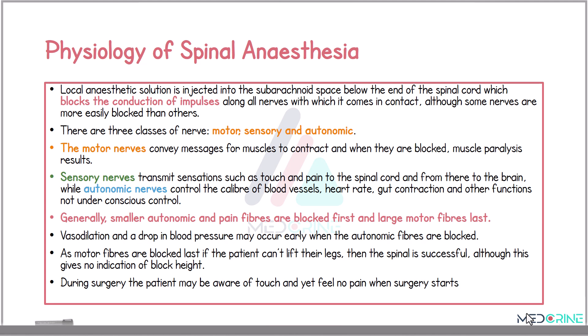Looking at the physiology of spinal anesthesia, local anesthetic solution is injected into the subarachnoid space below the end of the spinal cord, which blocks the conduction of nerve impulses along the nerves with which the drug comes into contact. There are essentially three classes of nerves: motor nerves, sensory nerves, and autonomic nerves. The motor nerves convey messages for the muscles to contract, and when they are blocked, muscle paralysis results.